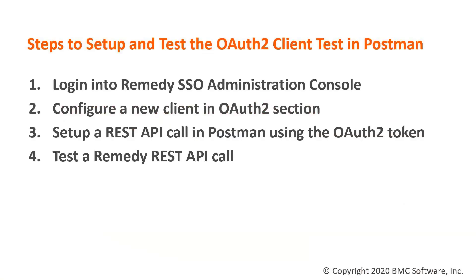The steps to set up the OAuth 2 client and test it in Postman are: logging in to Remedy SSO Administration Console to configure a new client in the OAuth section, setting up a REST API call in Postman using the OAuth token, and testing a Remedy REST API call.